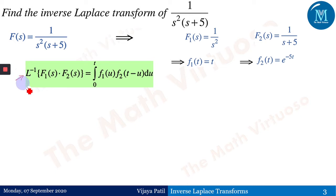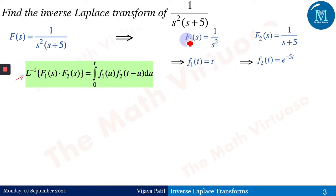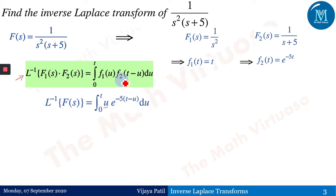This is the formula we saw in the last session: the inverse Laplace of F1 times F2 equals the integral from 0 to t of f1(u) times f2(t−u) du. So f1 is t, replaced as u since it's a function of u. And f2, being a function of t−u, means every t is replaced as t−u, giving e^(−5(t−u)) du, which equals u · e^(−5t+5u).